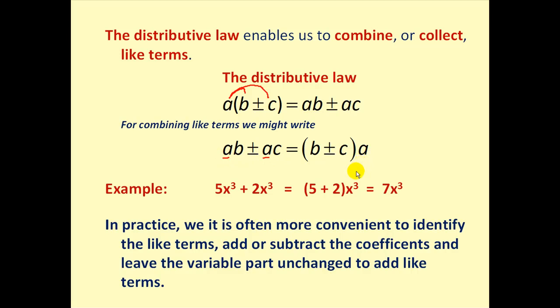So looking at this in the formal way, if we want to add or combine 5x cubed plus 2x cubed, notice both terms have three factors of x, so we can factor that out, which leaves us with 5 plus 2, which equals 7x cubed. Now formally, this is what allows us to combine or collect like terms.